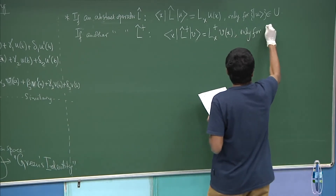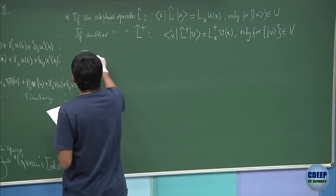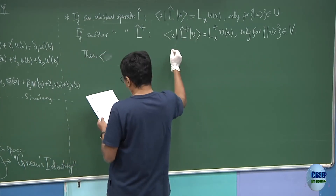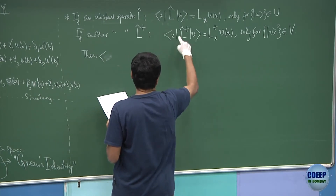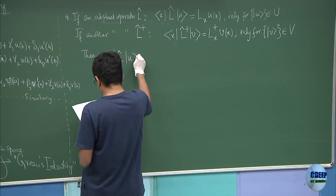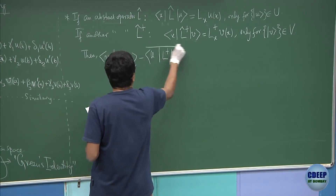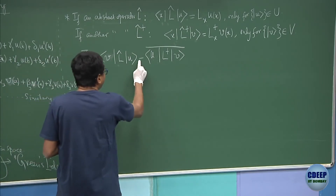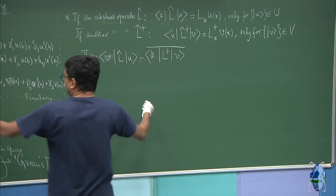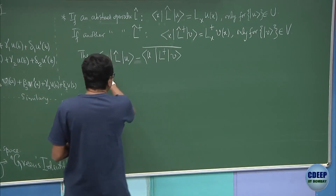Similarly, if another abstract operator L̂† acts on vectors v belonging to the function space V, then let us understand what is the difference of ⟨v|L̂|u⟩ minus the complex conjugate of ⟨u|L̂†|v⟩. This expression — do you recall? If these are equal, this is exactly the definition of the adjoint that we had in matrix algebra. So we want to see what this is in the differential operator formalism.